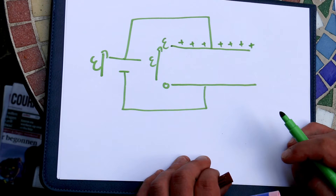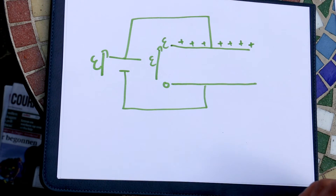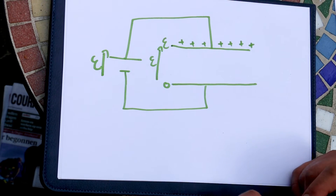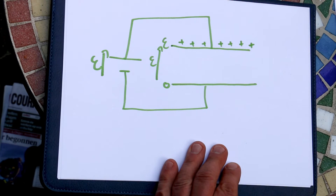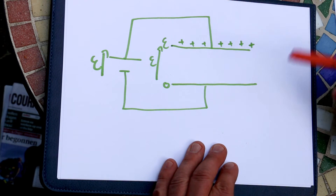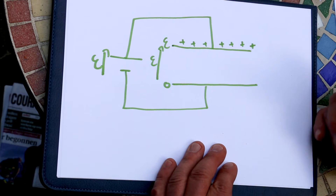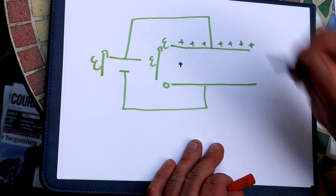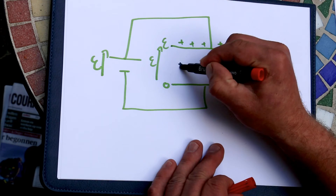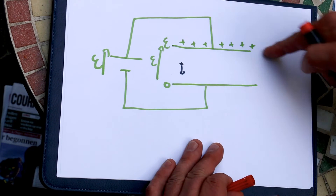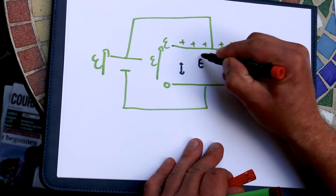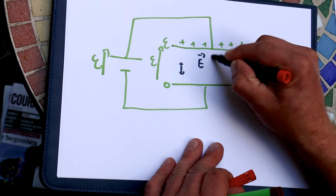Because you have a potential difference between the two plates, between the plates you will have an electric field that forms. The direction of the electric field will be the direction that will take a positive charge placed there — it would go downwards, repelled by these positive charges. So the electric field will be downwards.